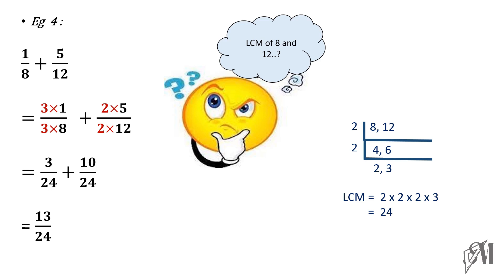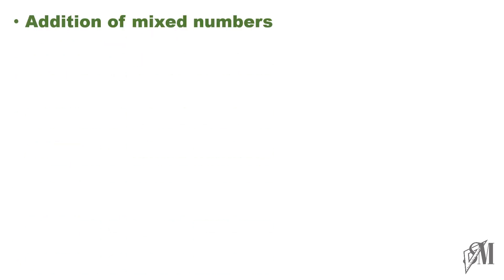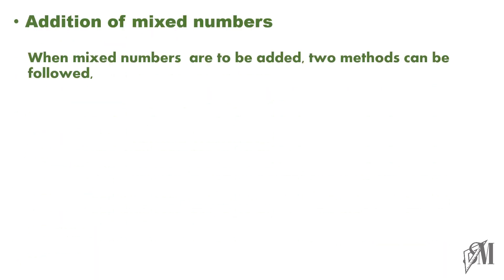First, you have to equate the denominators by multiplying one or both of the fractions by a given number in order to convert them to equal denominators, and then you can continue adding as usual. Then, let us go to the next section — addition of mixed numbers. When mixed numbers are to be added, you can follow two methods.